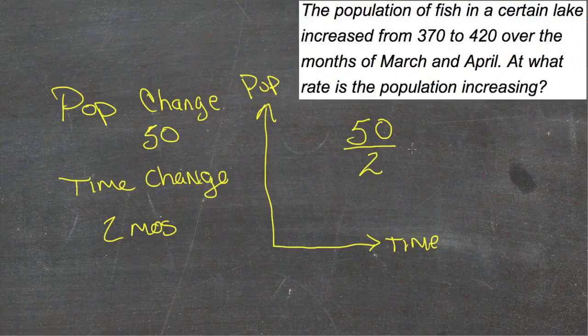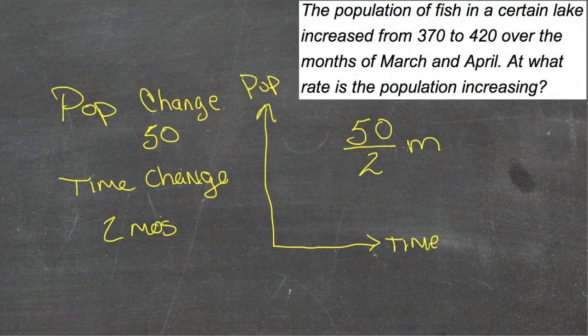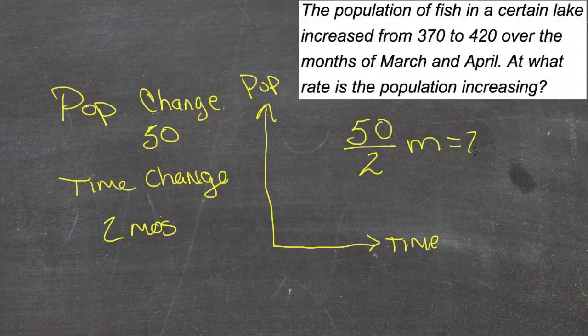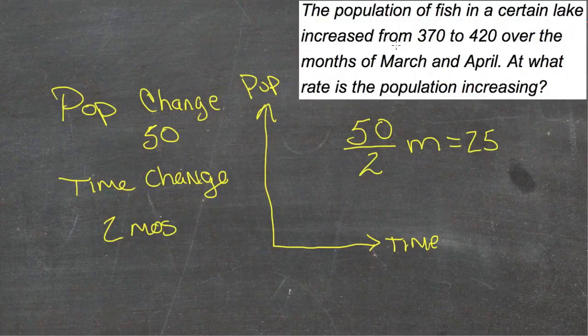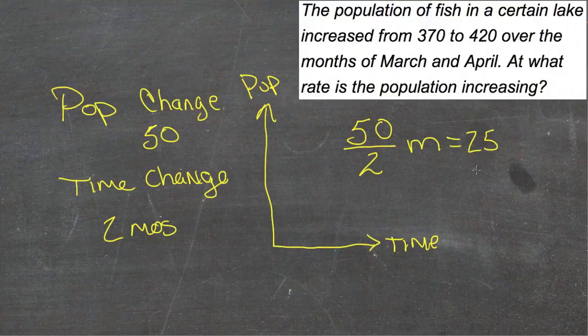And 2 months, or 2 as our change in x, or our run. So to find m, we'd simply simplify this fraction, 50 over 2, and we get an m of 25, which tells us that the population of fish are increasing at 25 fish per month.